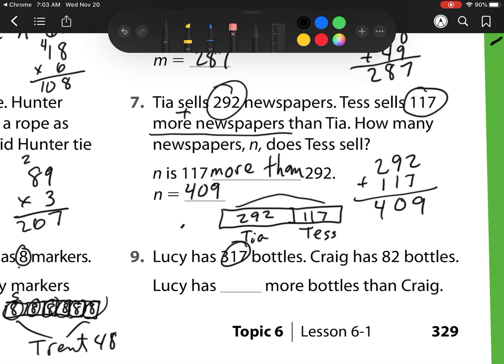Our next one is Lucy has 317 bottles. Craig has 82 bottles. Lucy has blank more bottles than Craig. Well, what I have here is Lucy has more, so I'm going to start with my model of Lucy. She has 317. This whole thing is that. What you'll notice is Craig has 82, so I have this 82 here. And what I need to do is I need to figure out how many more, this mystery part. So what I'm going to do is I'm going to take away this 82, I'm cutting it off. And what math operation is that? That will leave me with what's left, which is subtraction. So I have 317 and I just cut off or took away 82. So I have 235. So Lucy has 235 more bottles than Craig.